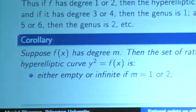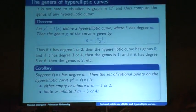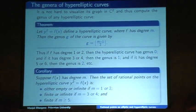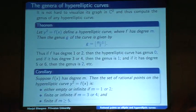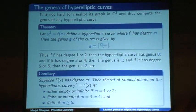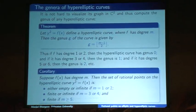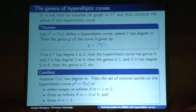A corollary is that if f(x) has degree m, then the set of rational points on the hyperelliptic curve y² = f(x) is either empty or infinite if m = 1 or 2 (genus 0 case). It's either finite or infinite — not saying much — if m = 3 or 4. And it's definitely finite if m ≥ 5, as a consequence of Faltings' theorem. So the degree corresponds roughly to the genus, and once the degree is at least 5, you know there are only finitely many rational solutions to y² = f(x).